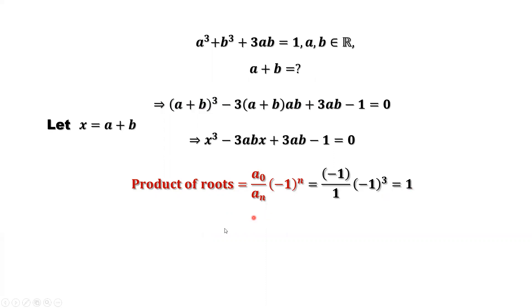We try 1 first. If we replace x by 1 here, you can see 1³ is 1, cancel this 1. This is -3ab, here is positive 3ab, they cancel each other, equal to 0. We imply x equals 1 is a root. It's a solution for this equation.